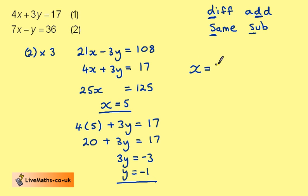Our solution then is x is 5, y is minus 1. But we should always check solutions to simultaneous equations.